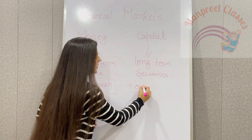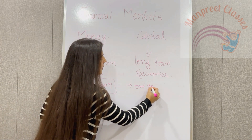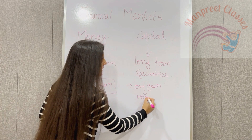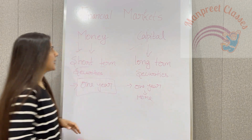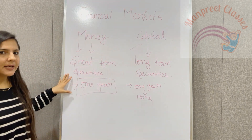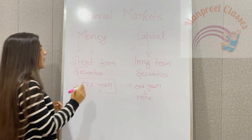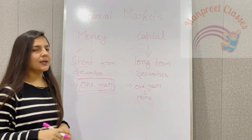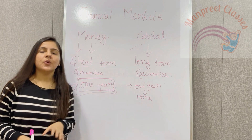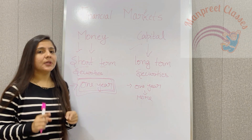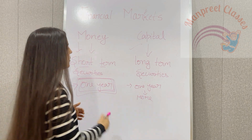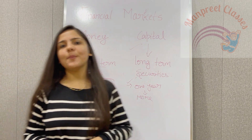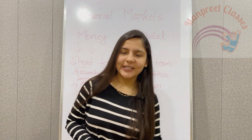Securities which have a maturity time period of one year or more are included in the capital market. So to summarize: money market includes securities with a maturity time span of under one year, and securities that mature in one year or more come under capital market. This completes the topic of financial markets.